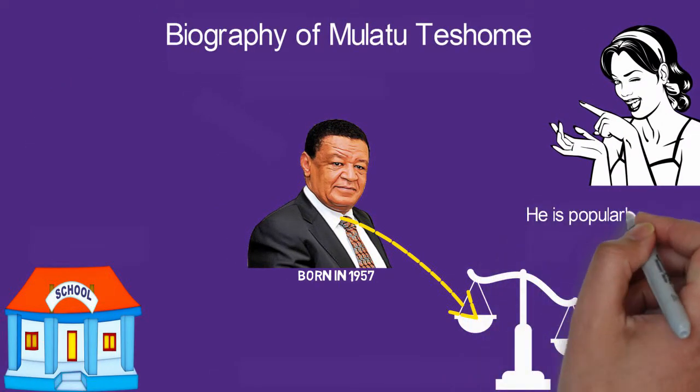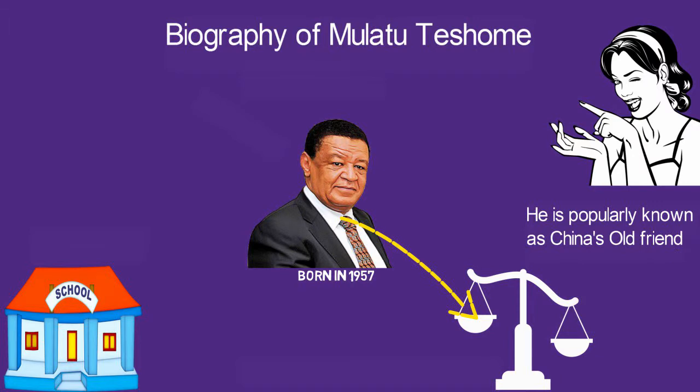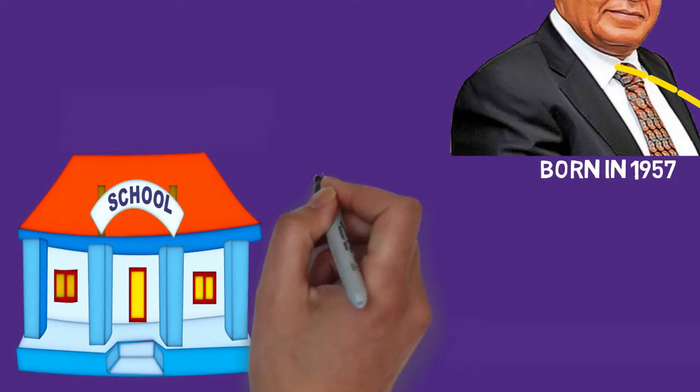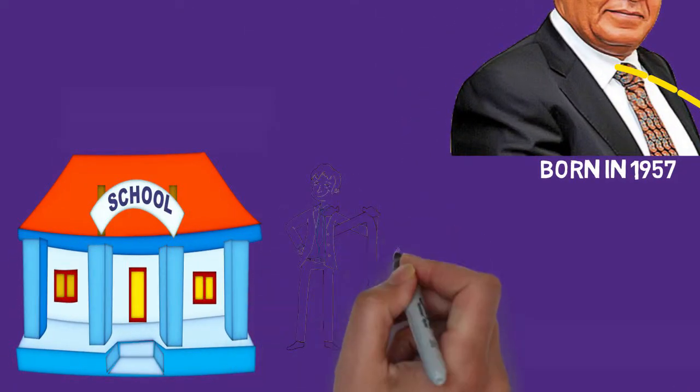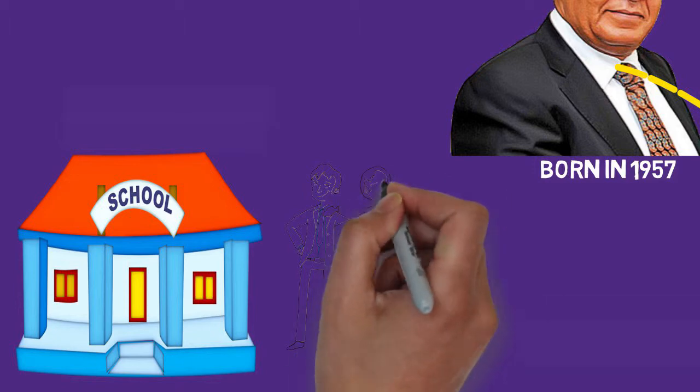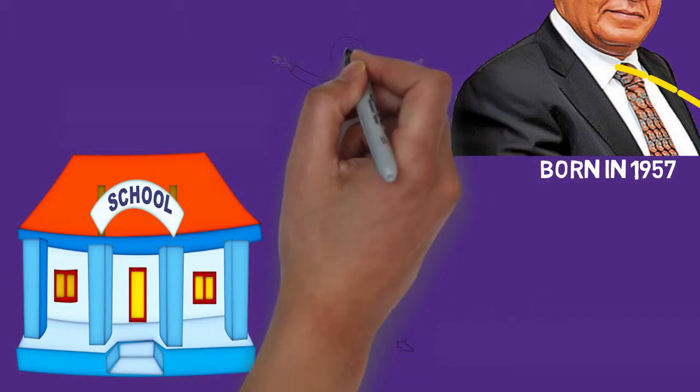He is popularly known as China's old friend because of the years he spent studying in China. He spent about 15 years in China, returning home at the age of 34 in 1991. Before his return, he had taught in some foreign schools.